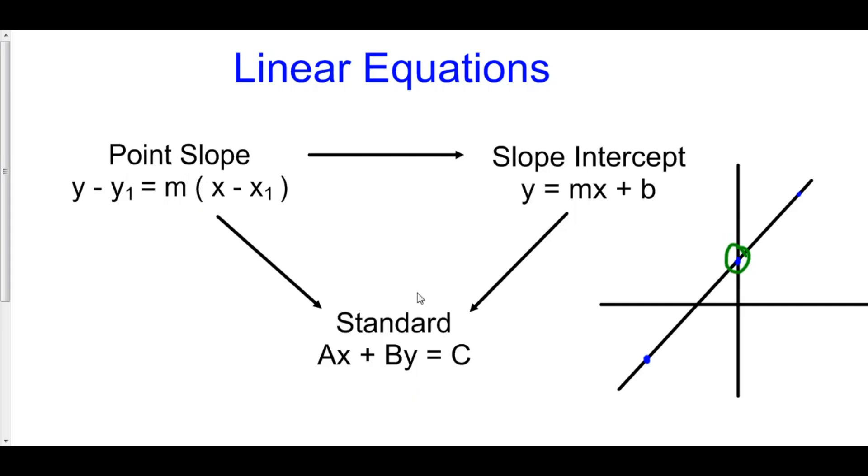We will never have to go to standard form, but we should know how to go from standard form to slope intercept form. Because sometimes we'll have to know the slope of a line in standard form. In which case, you can get it into slope intercept form and find the slope that way.